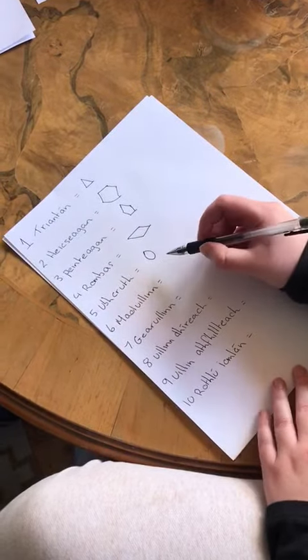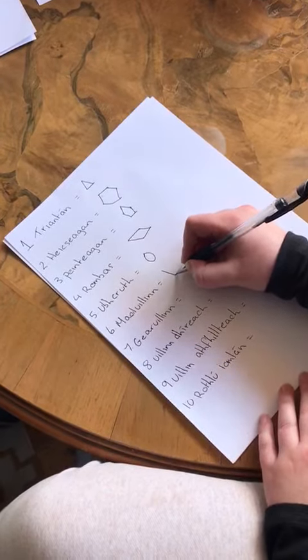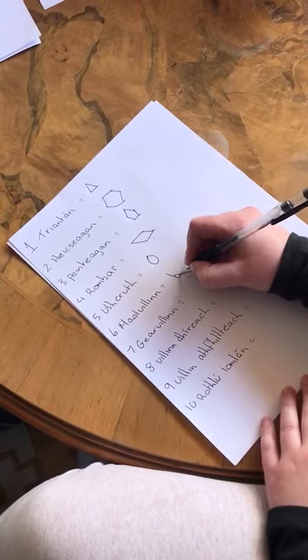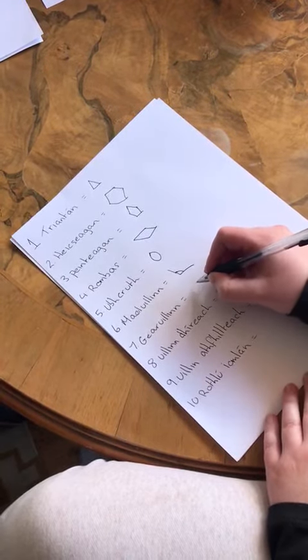Muilin is an obtuse angle. Geirillam is an acute angle.